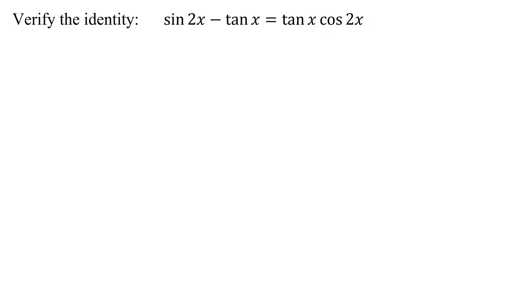In working with identities, we always want to start working on the more complicated of the two sides. But in this case, it's kind of hard to tell which one's more complicated. So let's look at the arguments of the trig functions. I have some arguments of 2x and some of plain old x, so I'm most probably going to have to use double angle identities in this problem.